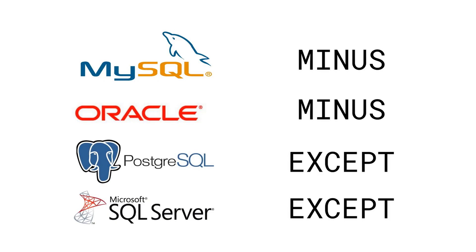The table you can now see on the screen shows the most popular databases alongside the keywords they accept. MySQL and Oracle use minus, while PostgreSQL and SQL Server use the keyword except. Check the documentation of your specific database to find out the details. So that's it when it comes to set operations. Remember to leave a comment or a thumbs up if you liked the video. I hope you will subscribe to our channel and let's learn SQL together.